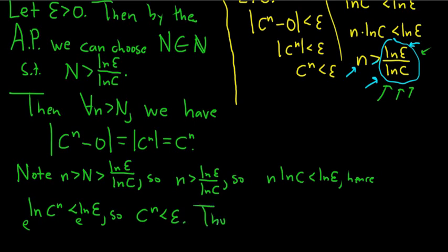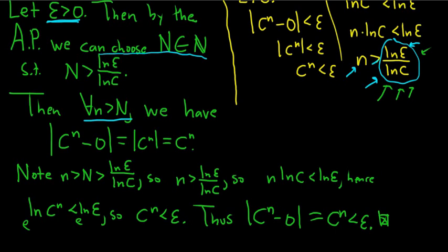Thus, let's rewrite what we have. The absolute value of c to the n minus 0 is equal to c to the n, which is less than epsilon. And that completes the proof, because given an epsilon greater than 0, we found a natural number N, such that for all little n bigger than capital N, this condition is true. a sub n minus l is less than epsilon.